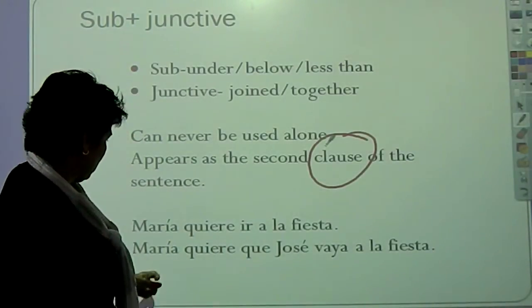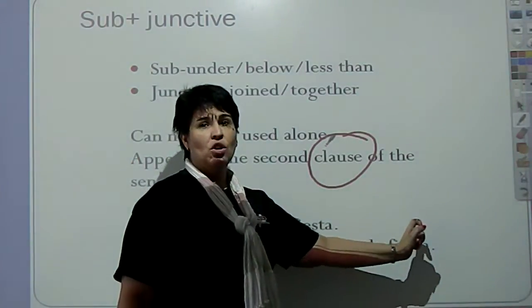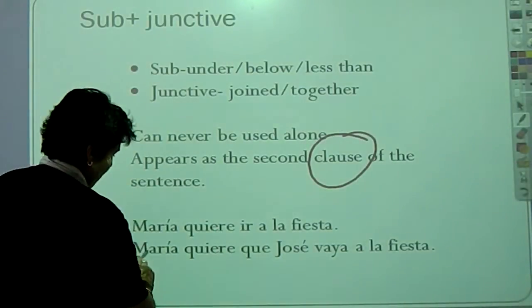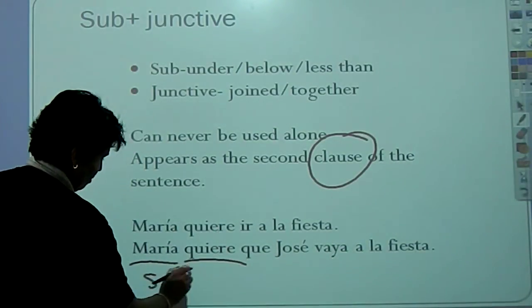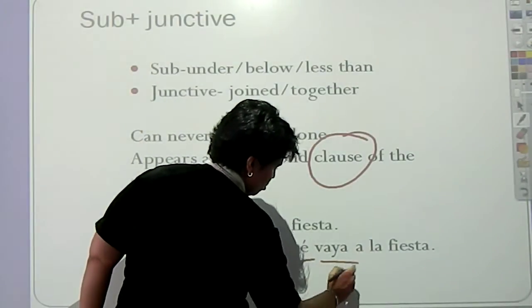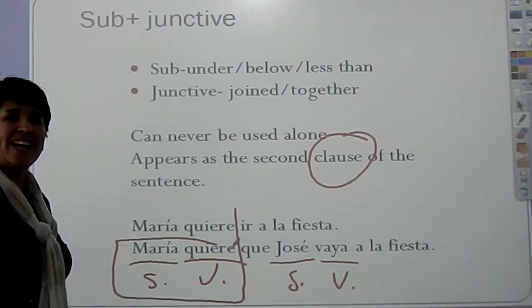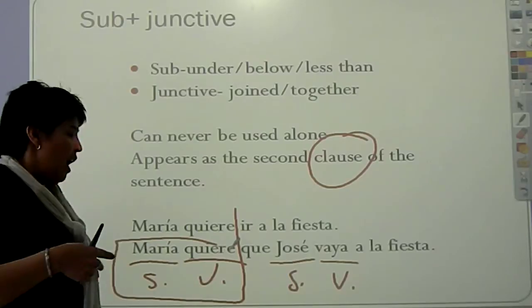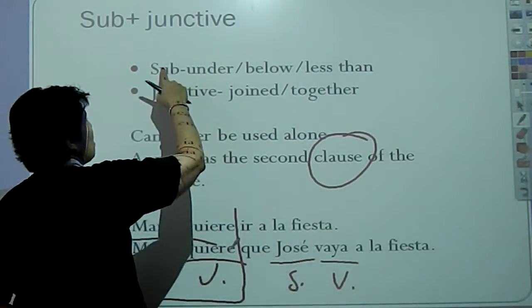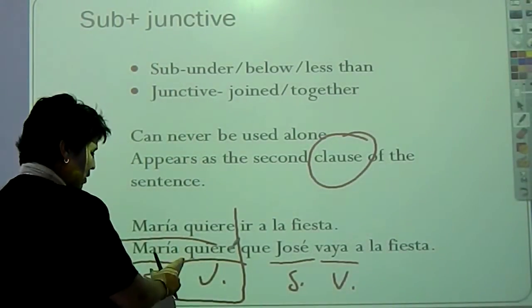However, check this out. Maria wants Jose to go to the party. Now we have two clauses. Maria wants subject, verb, Jose to go. Subject, verb. The first clause works as a trigger. And it triggers subjunctive to be used in the second clause. Because remember, it's sub. It can only be used in the second clause. It can never be the introductory.